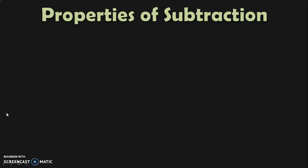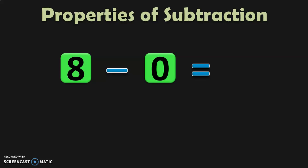The next topic is properties of subtraction. Let us quickly revise that. What happens when you subtract 0 from any number? You get the same number — this is one of the properties of subtraction. So 8 minus 0 will give you 8. This is similar to the properties of addition: when you add 0 to any number you get the same number, and similarly when you subtract 0 from any number you get the same number.